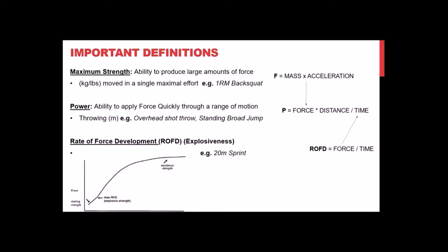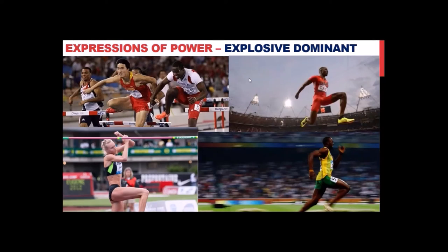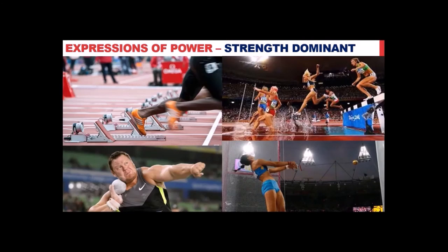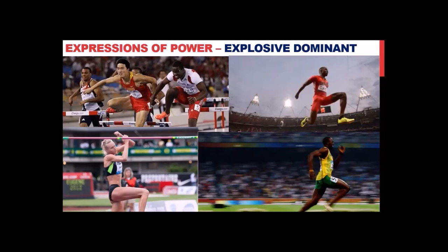Some expressions of explosiveness — rate of force development — in track and field include: touchdown in hurdles, takeoff in high jump, contact in the first 20 meters of a sprint, and triple jump. These are actions where the athlete is only on the ground for a short period of time and is limited by how fast they can develop force.